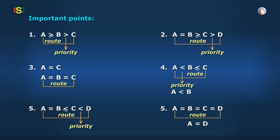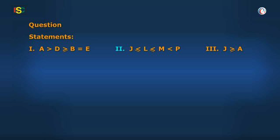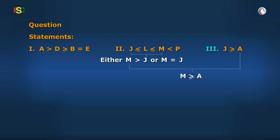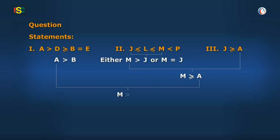Yes, ma'am, I understood this point. Right. Keeping all this in mind, from the second statement — j less than or equal to l, l less than or equal to m, m less than p — we get either m greater than j or m equal to j. From here, we conclude that m is greater than or equal to a, because the third statement says j is greater than or equal to a. Combining the two conclusions derived till now — a greater than b and m greater than or equal to a — we get m greater than b.